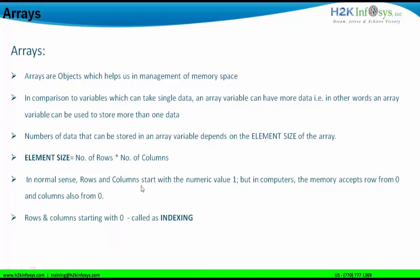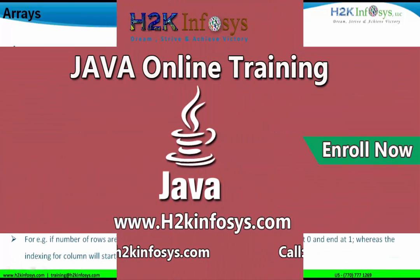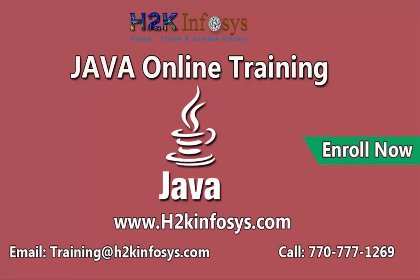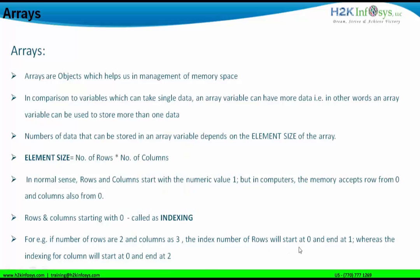For example, if the number of rows is two and columns is three, the index numbers for rows will start at zero and end at one. Row number one has index number zero, row number two has index number one. Similarly for columns: column number one has index zero, column number two has index one, and column number three has index two. That is why the indexing for columns starts at zero and ends at two when the number of columns is three.